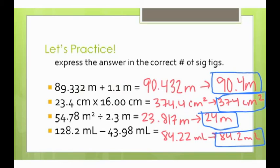In the first one, we're adding, and so our answer needs to have the lowest decimal places, which would be one decimal place versus three. And so that's why we round the number to 90.4 meters. Notice the meters is still the unit, because when you're adding and subtracting, the unit does not change.